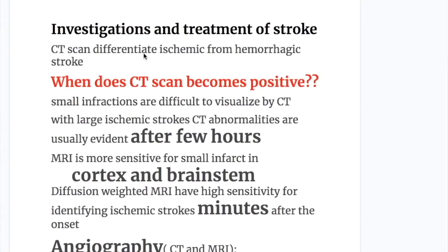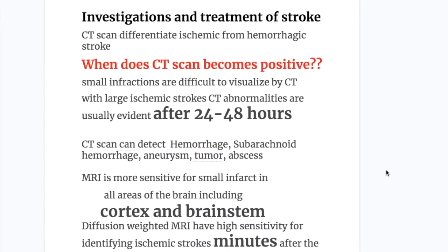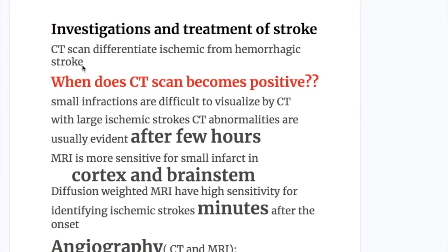CT scan differentiates ischemic stroke from hemorrhagic stroke. CT abnormalities are usually evident after 24 to 48 hours, not immediately. CT scan can detect hemorrhages, subarachnoid hemorrhages, aneurysms, tumors, and abscesses. MRI is more sensitive for small infarcts in all areas of the brain including cortex and brain stem. Diffusion-weighted MRI has high sensitivity for identifying ischemic stroke within minutes after onset.